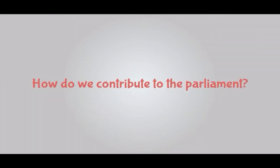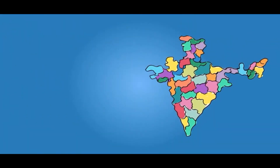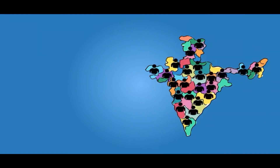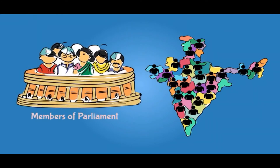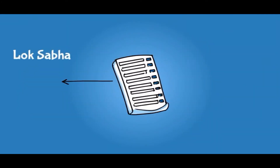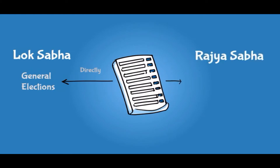How do we contribute to Parliament and its decisions? The country is divided into numerous constituencies. Each of these constituencies elects one person to the Parliament. Once these candidates become part of the Parliament, they become members of Parliament. We elect the members of the Lok Sabha directly through general elections and the members of the Rajya Sabha indirectly through state legislative assemblies.